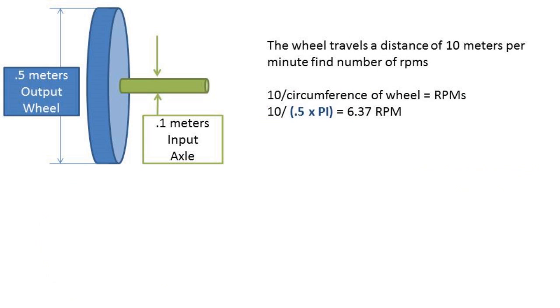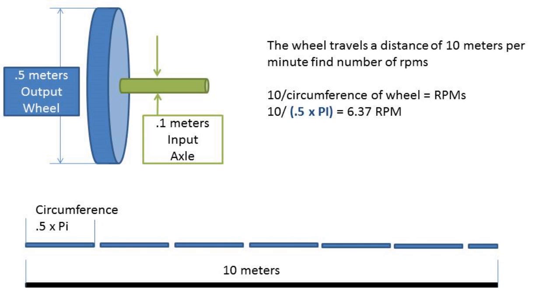Finally, let's say the wheel moves a distance of 10 meters per minute, and we want to find the rotations per minute of the wheel and axle. We can take the distance per unit of time divided by the circumference of the wheel to get the correct answer. In this case, we can take the 10 meters per minute traveled over 0.5 meters diameter times pi to get to the circumference of the circle, and we get 6.37 rotations per minute.